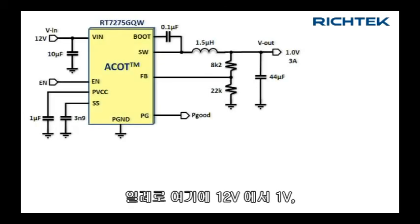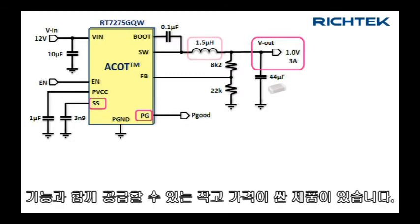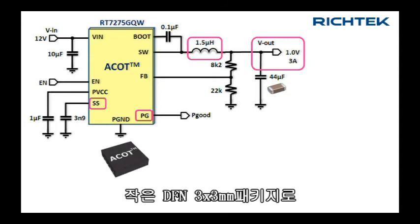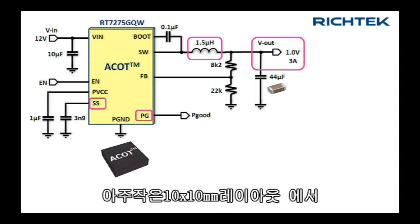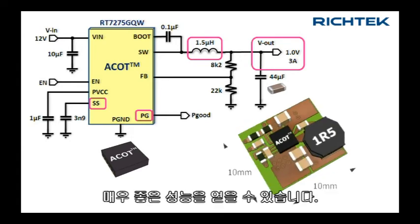Here is an example of a 12V to 1V 3A supply with programmable soft start and power good signal that uses small low-cost components. The small DFN 3x3 mm package allows for a very compact layout measuring only 10x10 mm while achieving powerful performance.